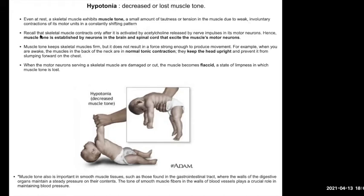This is all a neural thing — it's happening because your motor neurons are being told in some way to maintain that rotating basis of contraction. If there's any kind of problem, or you were asleep or under heavy sedation, and that motor neuron function stops firing those action potentials, your muscles basically just become limp.